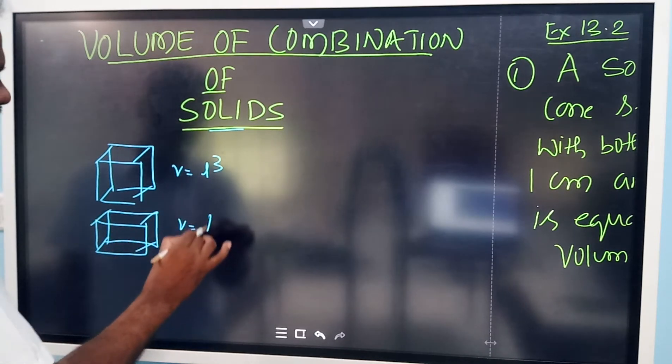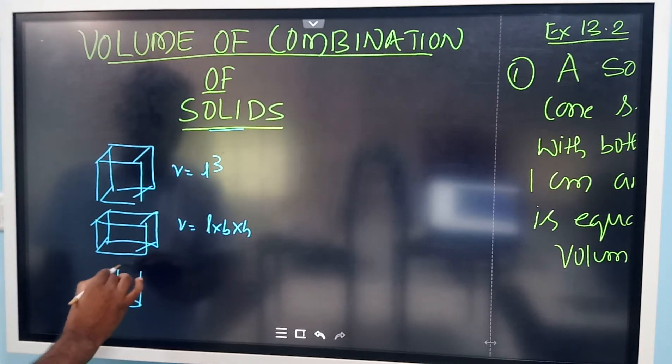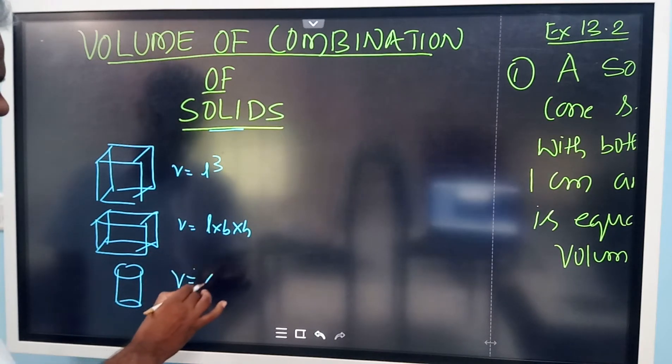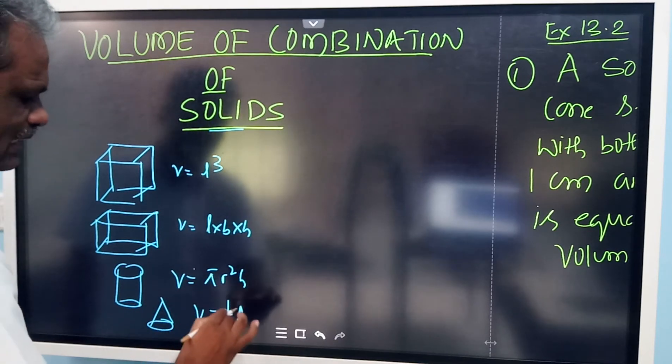Volume of cuboid is equal to L×B×H. Volume of cylinder, you know it is πR²H. Volume of cone, it is (1/3)πR²H.